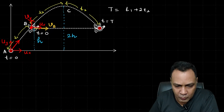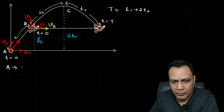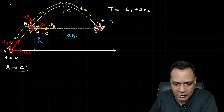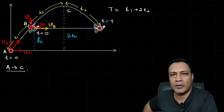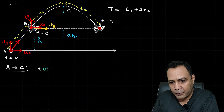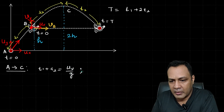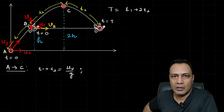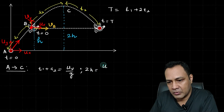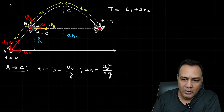For motion from A to C — from launch to the highest point — the time taken is t1 plus t2, which equals uy divided by g. The maximum height reached from A to C is 2h, giving the equation 2h = uy² divided by 2g.